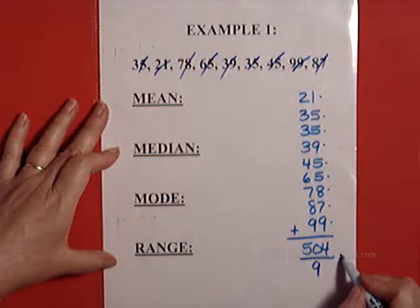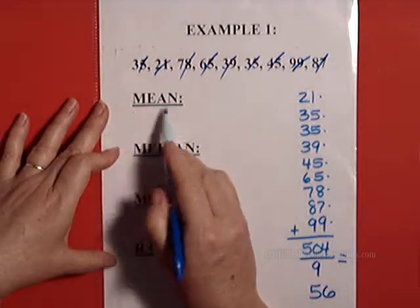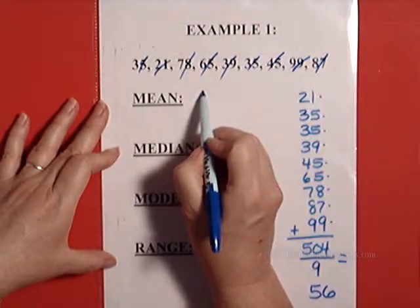Okay, now you're going to add those together and you'll get a total of 504. And then remember, we divide this number by how many numbers there are, and there are 1, 2, 3, 4, 5, 6, 7, 8, 9 numbers. So 504 divided by 9 equals 56. So the average, or the mean, of all these numbers is 56.